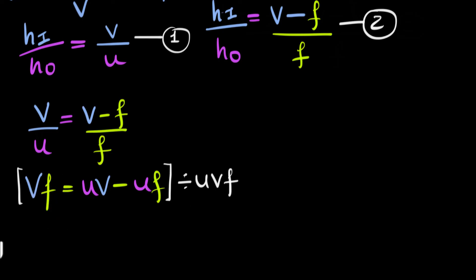That equals to, notice U, V cancels over here. So you end up with one over F, minus one over V, over here.